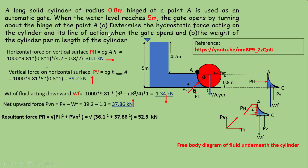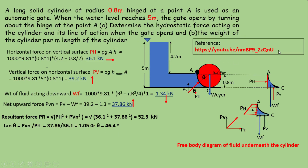The line of action is found from tan θ = pvn / pH = 1.05, giving θ = 46.4 degrees. How to calculate the resultant hydrostatic force and its line of action is explained in this video, which you can refer to or verify independently.